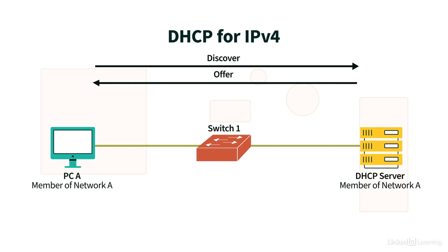When the DHCP server receives that Discover broadcast, it responds to PCA with an Offer message — that's the O in the Dora memory aid. The DHCP server's Offer message tells PCA the IP address of the DHCP server. PCA might receive more than one Offer message from multiple DHCP servers on the subnet, and it will select the one it receives first. In this case, PCA received only one Offer message and has now learned the IP address of the DHCP server.